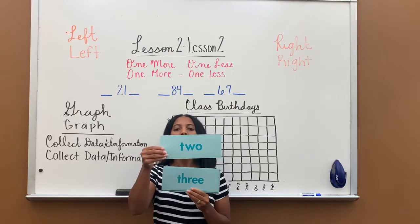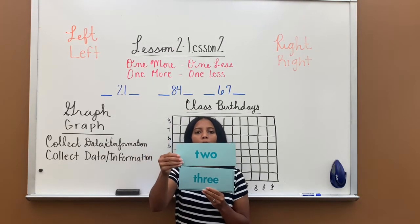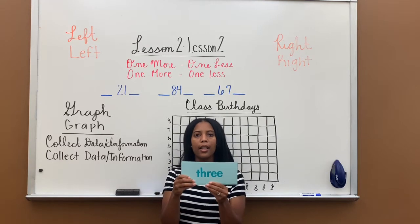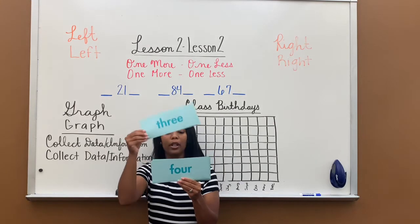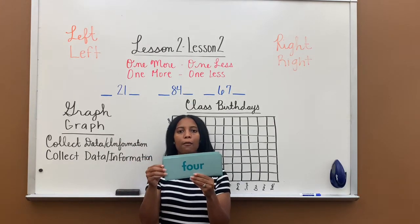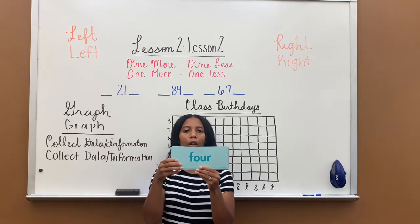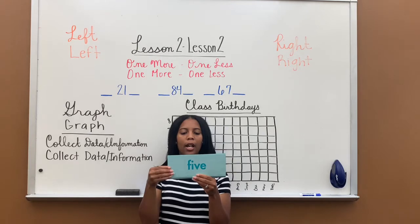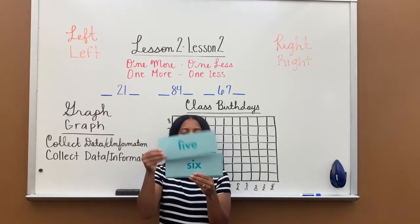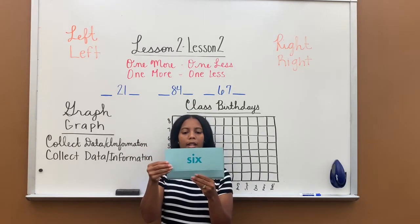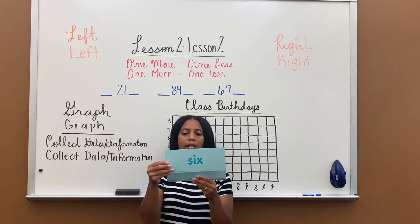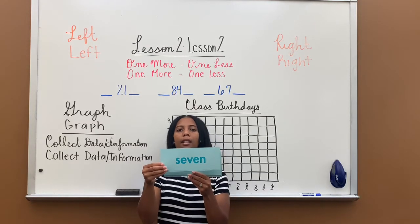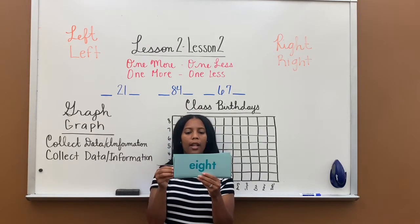Next one is two — T-W-O, two. Next one is three — T-H-R-E-E, three. Next one is four — F-O-U-R, four. Five — F-I-V-E, five. Six — S-I-X, six. Seven — S-E-V-E-N, seven.